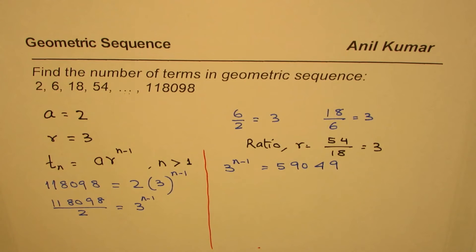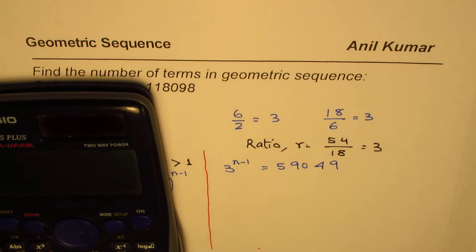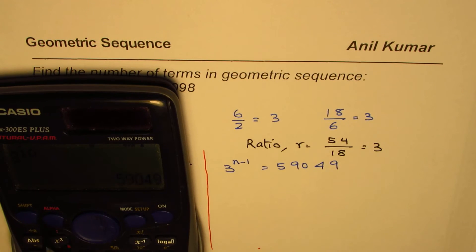Now how to solve such an equation? One way is you could randomly start putting 3 to the power of some big number, let's say 10. Fortunately we got the same answer. You could do in sequence like you could have done 3 to the power of let's say 8, you get a smaller number, then you try a bigger number, let's say 11.